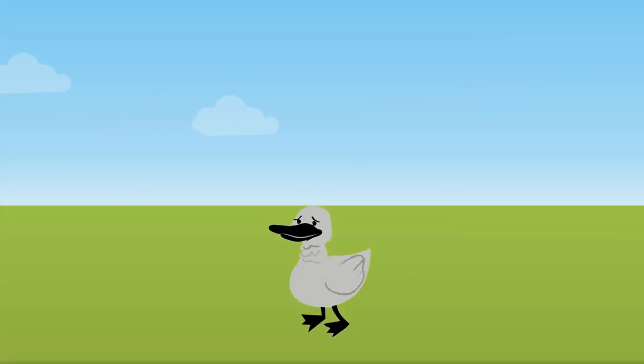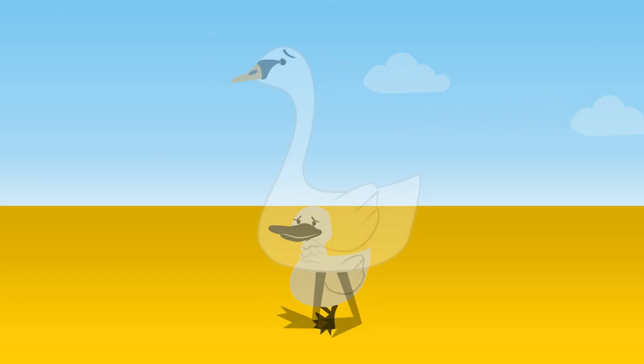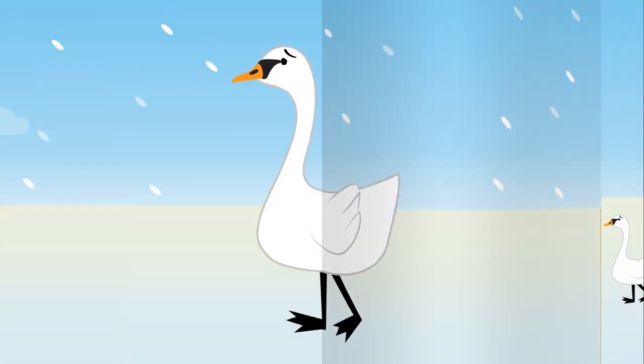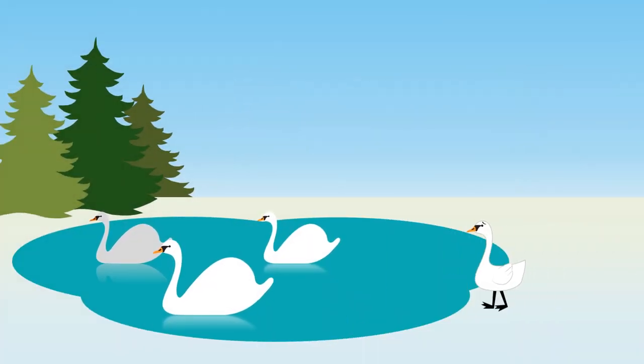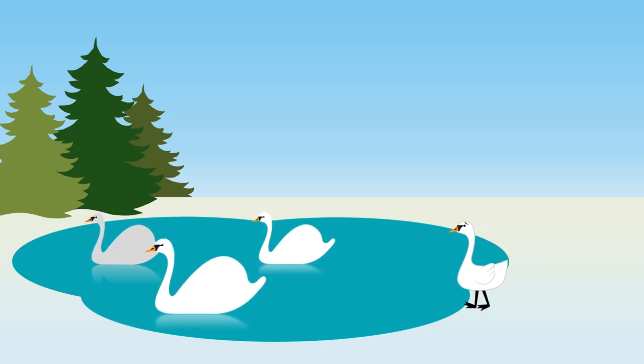The Ugly Duckling wandered for a whole year and was always unhappy. One day he saw a flock of beautiful swans. He approached them, even though he was sure they would reject him too.